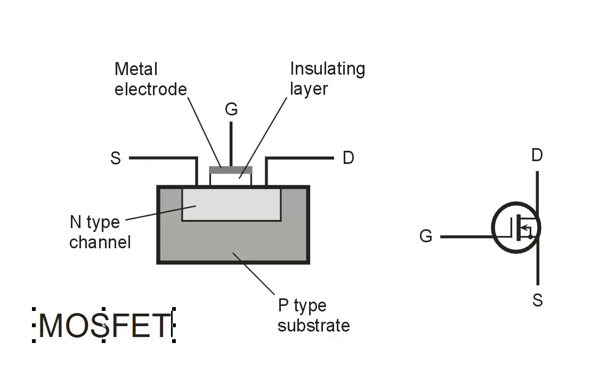This particular device is an N-channel MOSFET because, as you can see, the channel is N-type semiconductor material. We have a P-type substrate on which that N-type material rests.